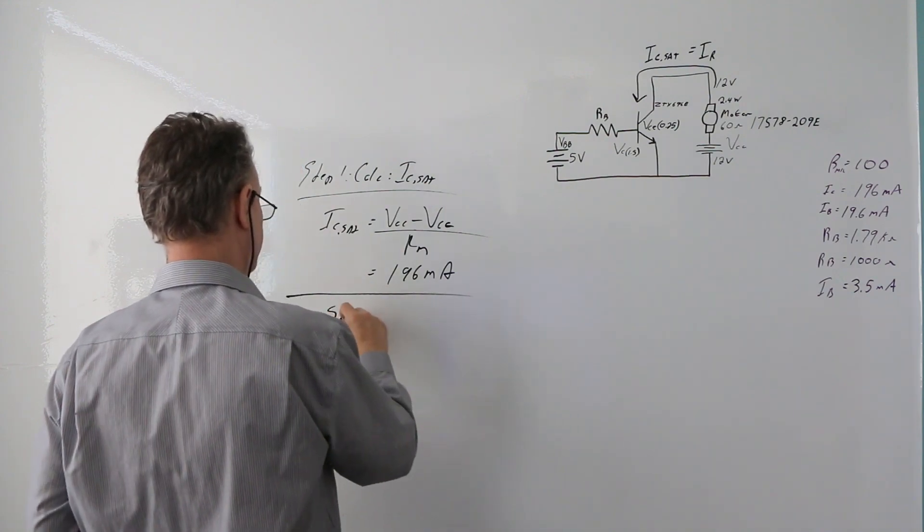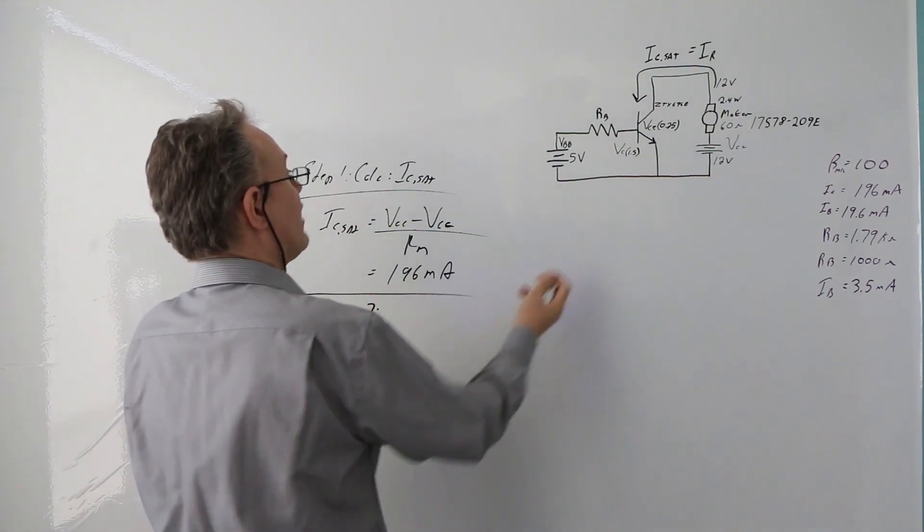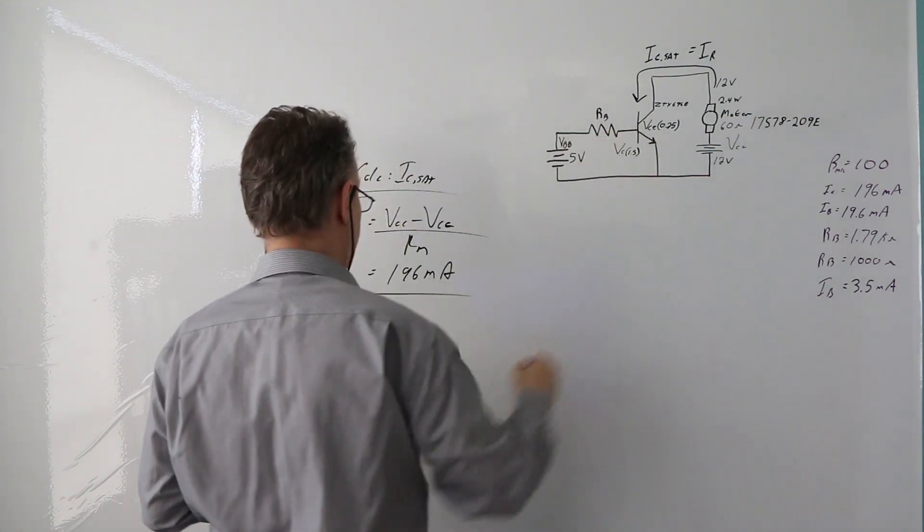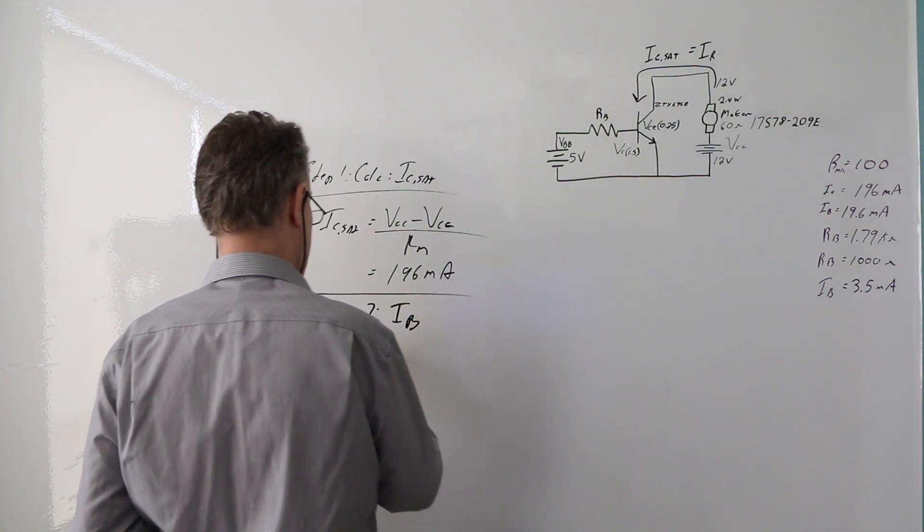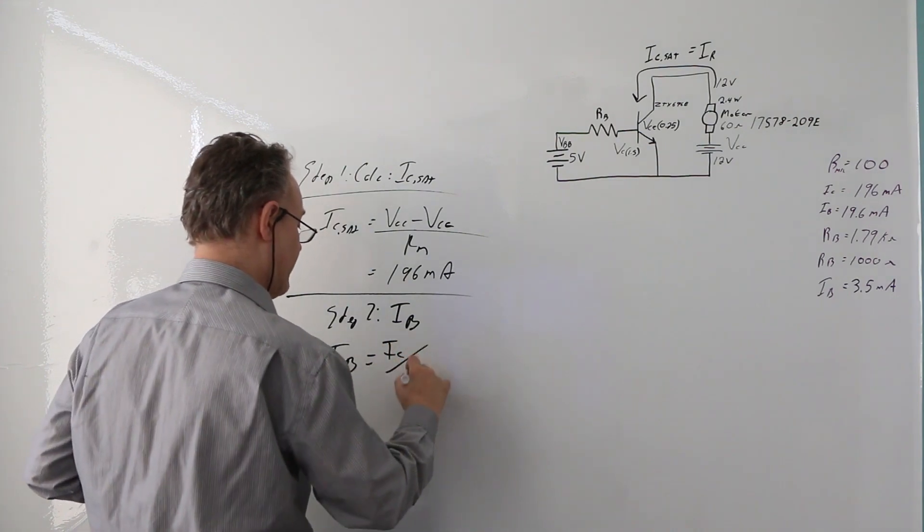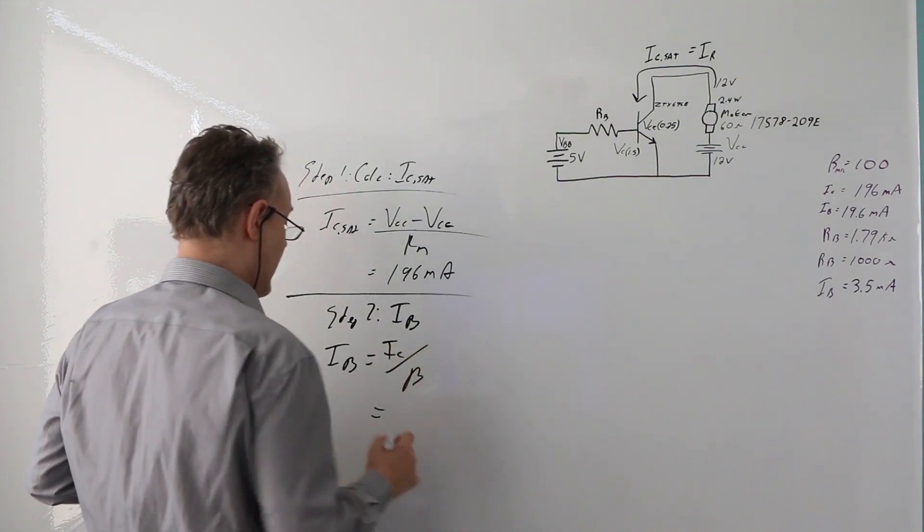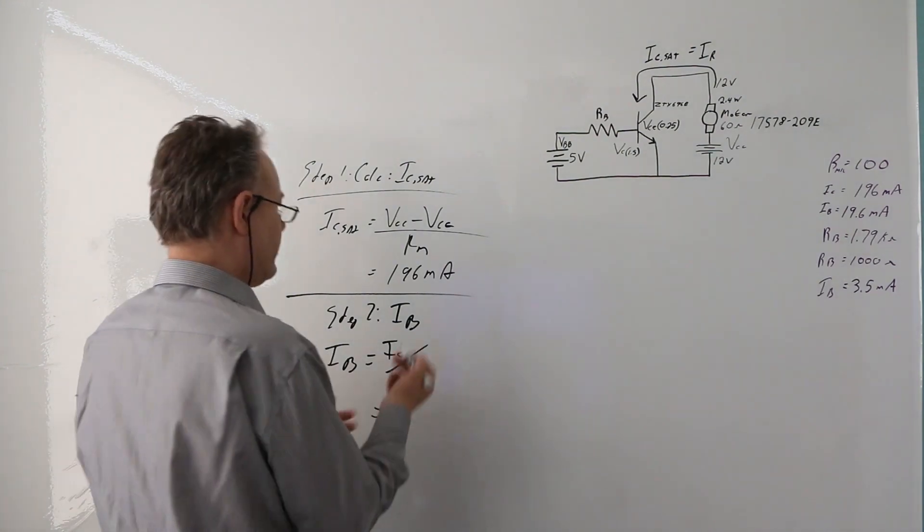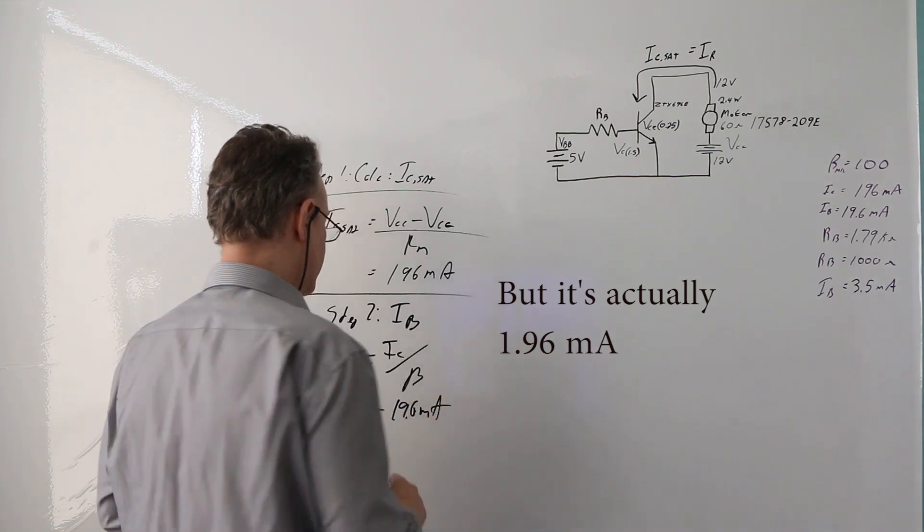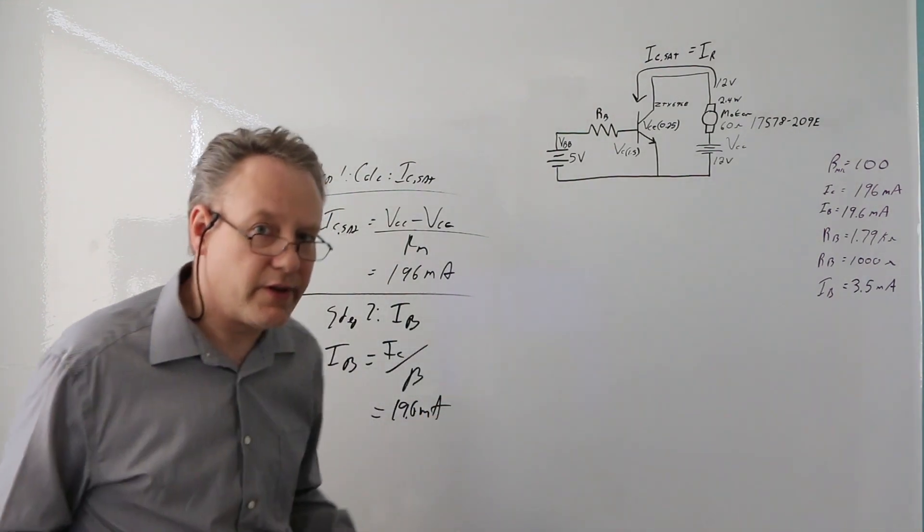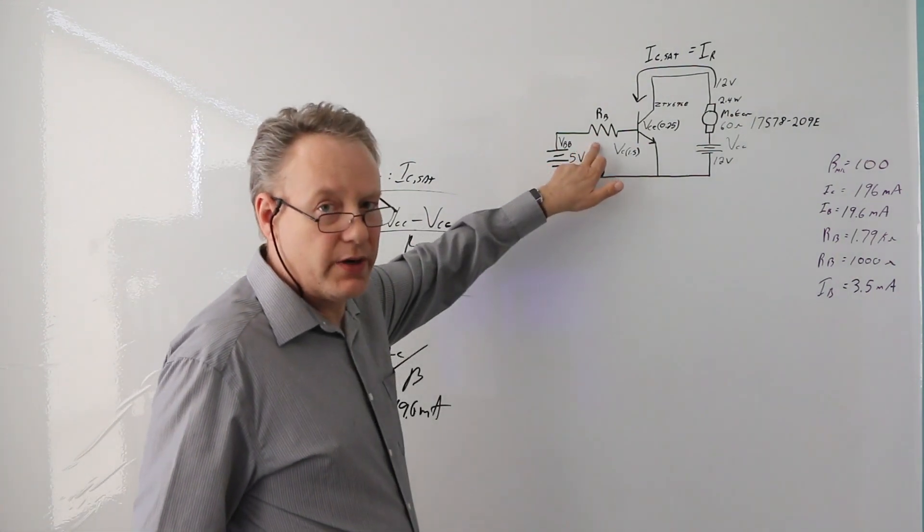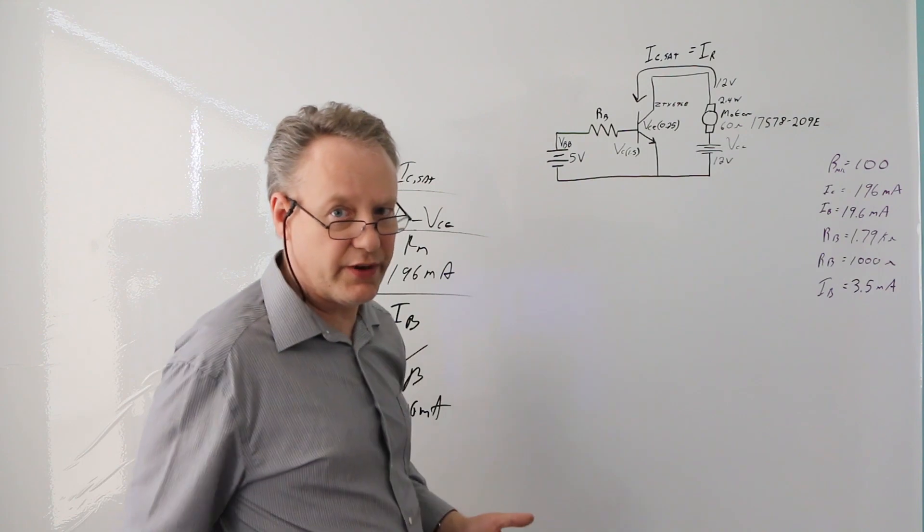For step two, we need to calculate the current going through here to make that happen. We do that with the gain. In this case it's the IB. We know that IB is going to be my IC divided by my gain. In this case I've got 19.6. That's easy, just move a decimal - 19.6 milliamps. Just a small amount, it's actually one one hundredth. So we now have to figure out what resistive value is going to give us that current. That's step three.